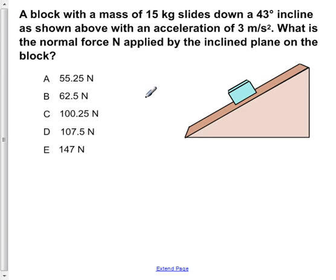A block with a mass of 15 kilograms slides down a 43-degree incline, as shown above, with an acceleration of 3 meters per second squared. What is the normal force N applied by the incline on the block?